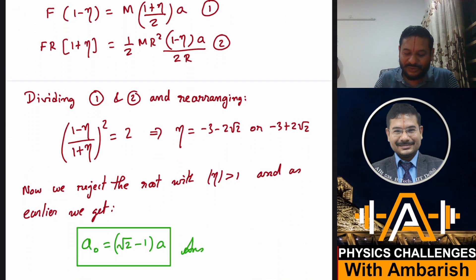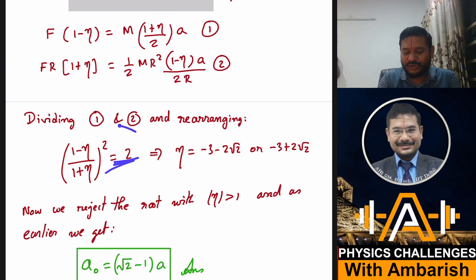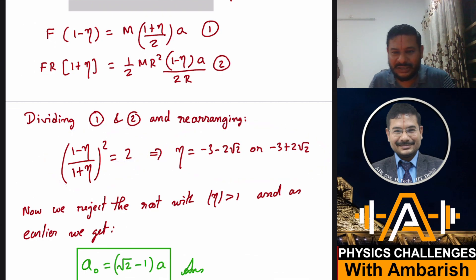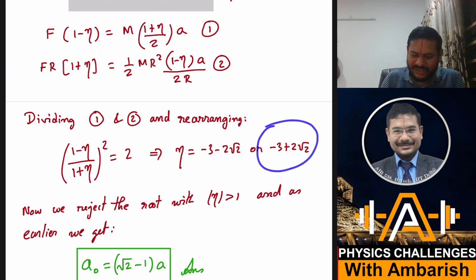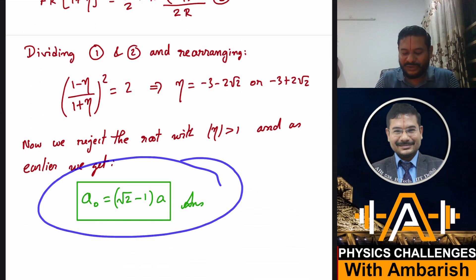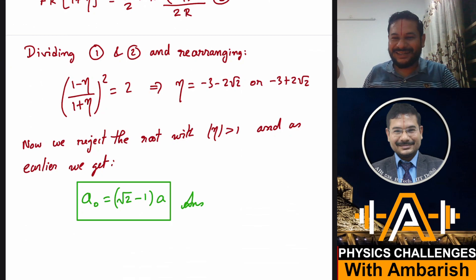Solving (1−η)(1+η)² = 2 gives the same two roots for η as the AGP method. Choosing the physically valid root (|η| < 1), the final answer is again a₀ = (√2 − 1)·a. That is Mihir's beautiful, elegant solution — much shorter than my approach but arriving at the same result.